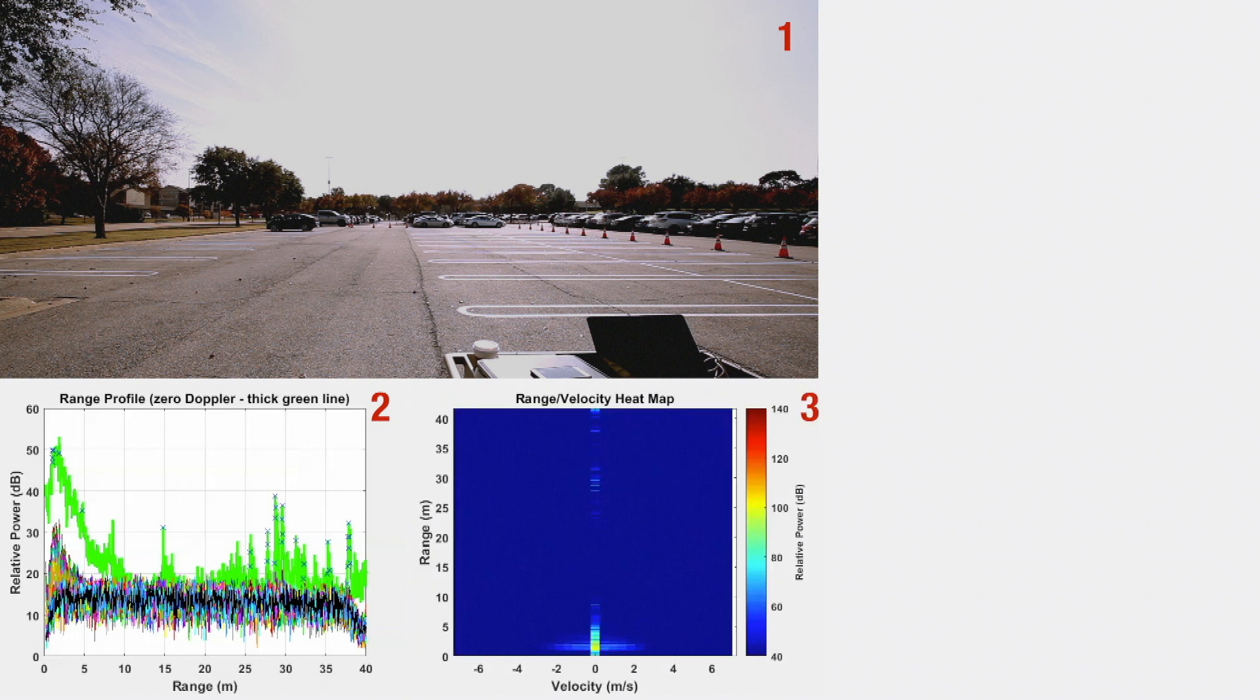Plot 3 is a heat map representing information of range and velocity with the colors representing signal power in dB.